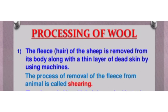The first process is shearing. The fleece of the sheep along with a thin layer of skin is removed from its body - this process is called shearing. Shearing machines, similar to those used by barbers, are used to shave off hair. Usually hair is removed during hot weather.